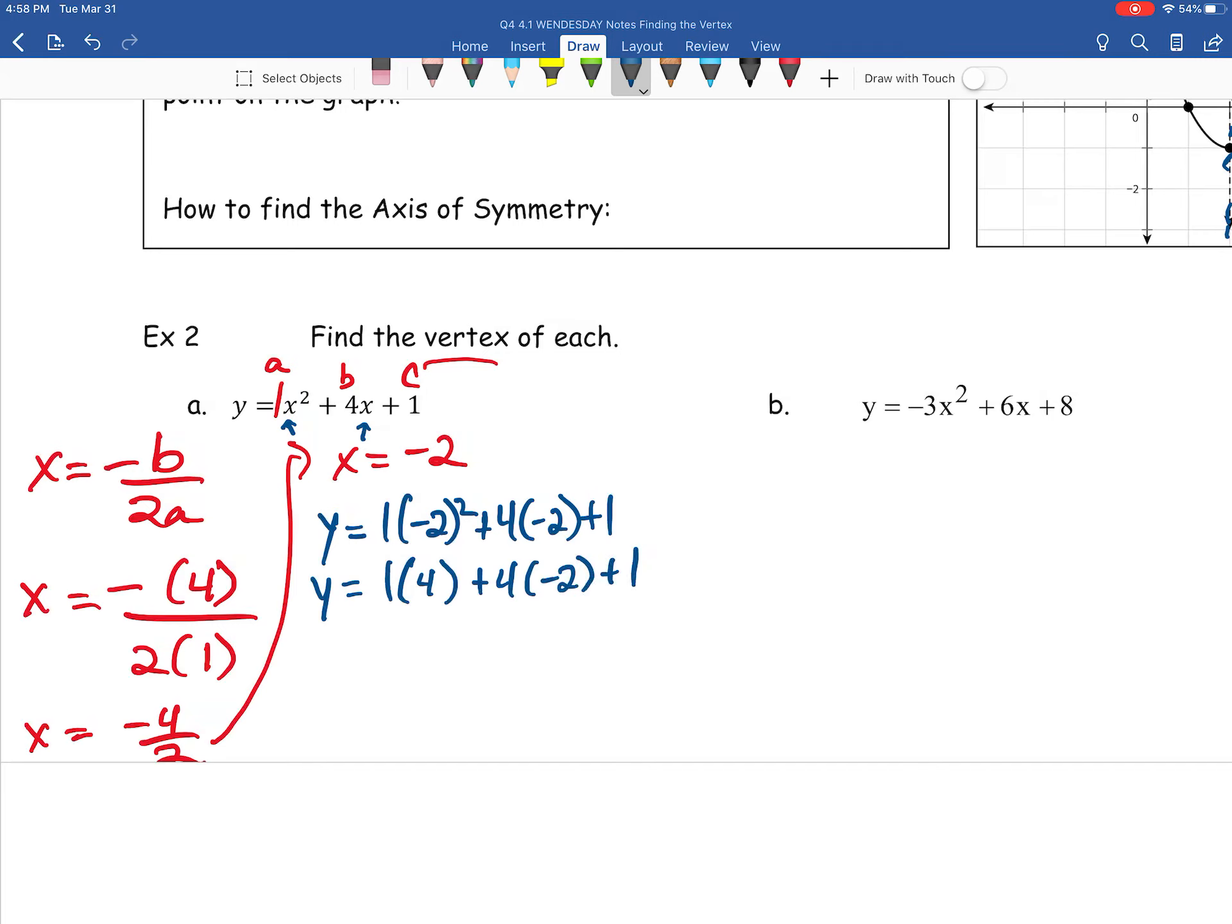All I did was my exponent. Now, I'll go ahead and multiply these two terms together. So, we have y equals 4 minus 8 plus 1. And then lastly, just combine everything together. It looks like it comes out to be negative 3. So, our vertex here comes out to be negative 2 comma negative 3.